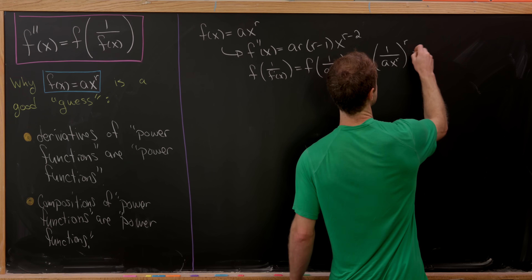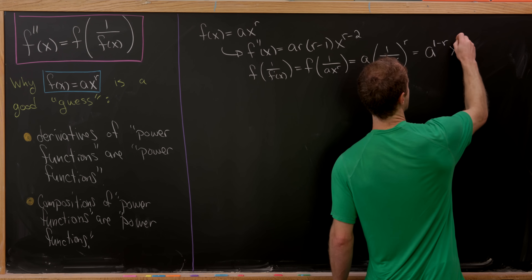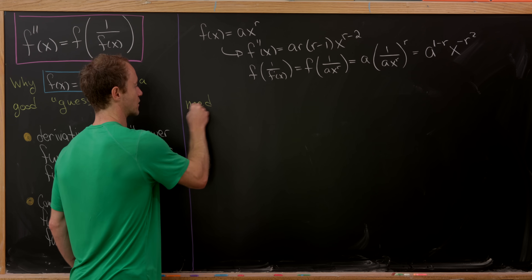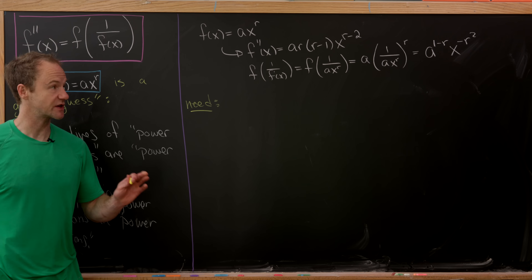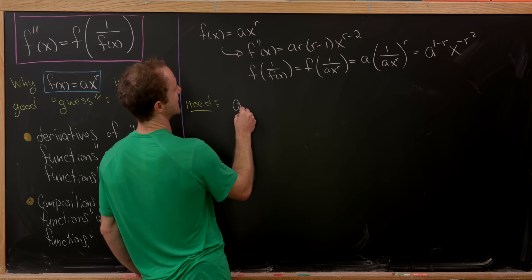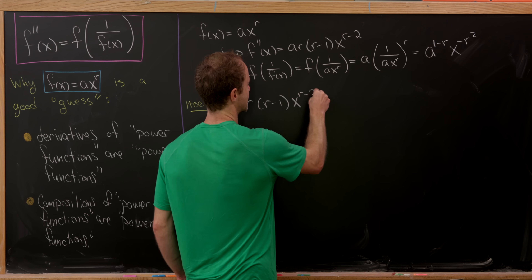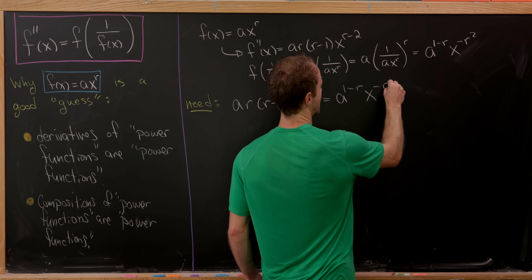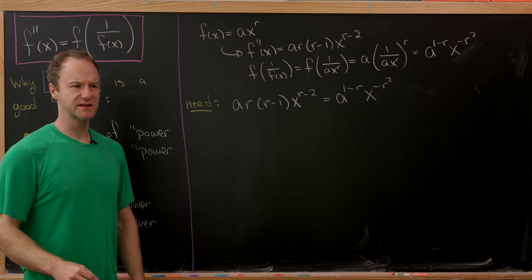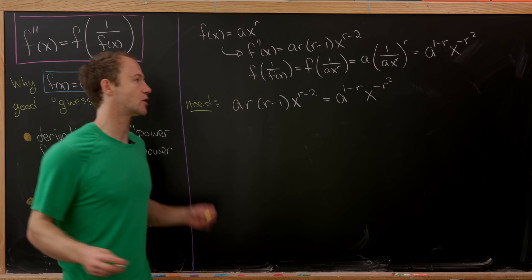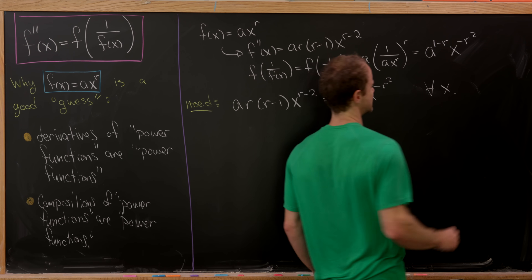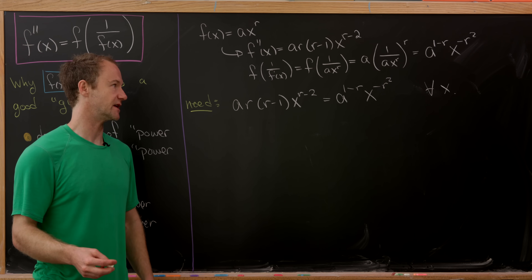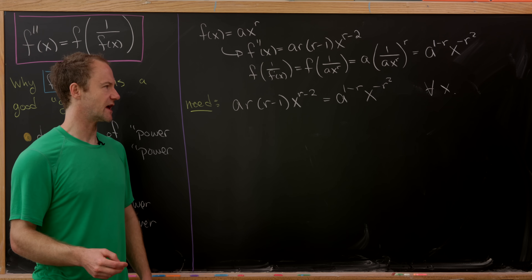Simplifying, we get a to the (1 minus r) times x to the (minus r squared). So for equality — to satisfy our compositional differential equation — we need a times r times (r minus 1) times x to the (r minus 2) to equal a to the (1 minus r) times x to the (minus r squared). This has to hold for all x in the domain of whatever function we end up with.